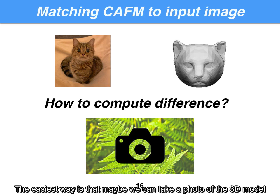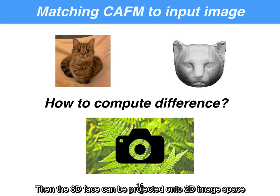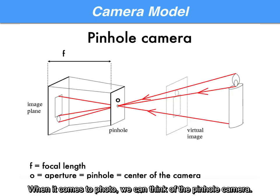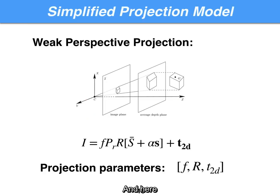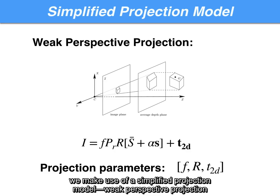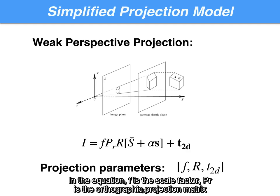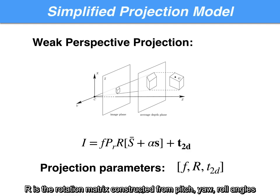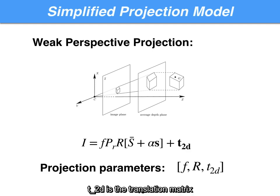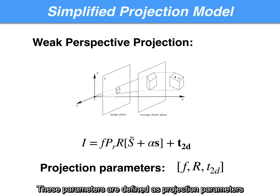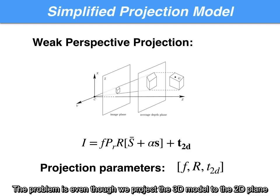The easiest way is to take a photo of the 3D model, projecting the 3D face onto 2D image space. We make use of a simplified projection model: weak perspective projection. Suppose the relative depth of points on the object is much smaller than the average distance. In the equation, S is the scale factor, PR is the orthographic projection matrix, R is the rotation matrix constructed from pitch, roll, and yaw angles, and T2D is the translation matrix. These parameters are defined as projection parameters.